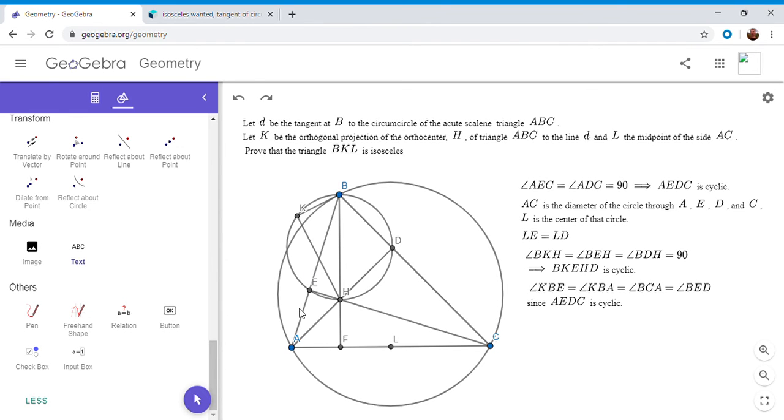And BCA is equal to BED. Why is that? So again, people who do geometry a lot may just recognize that. But basically, like I mentioned before, AEDC is cyclic, which I mentioned up here. So because of that, in a cyclic quadrilateral, any angle is equal to the exterior of the opposite angle. So angle BCA, that would be basically angle DCA in that cyclic quadrilateral, has to equal the exterior of the opposite angle, which is BED. Okay, so we've shown that KBE is BED.